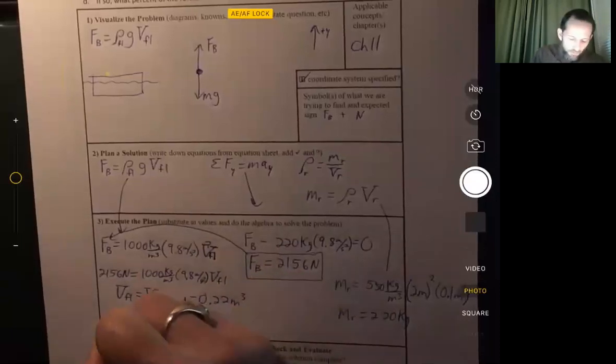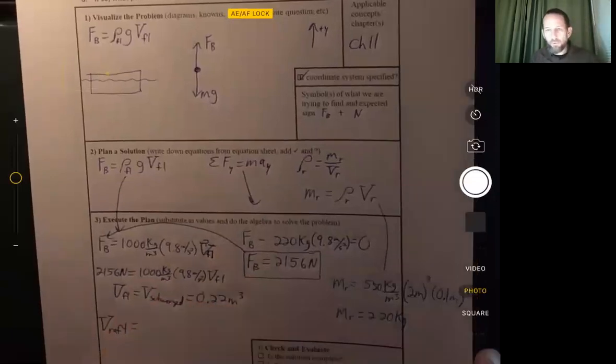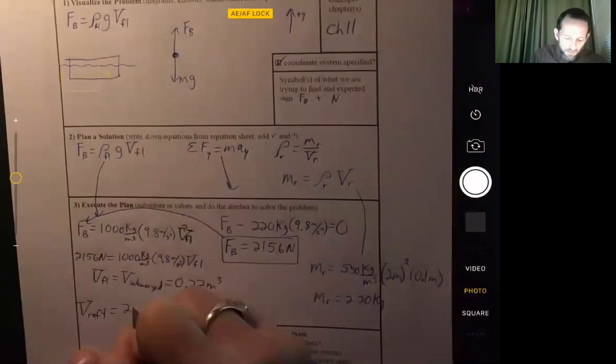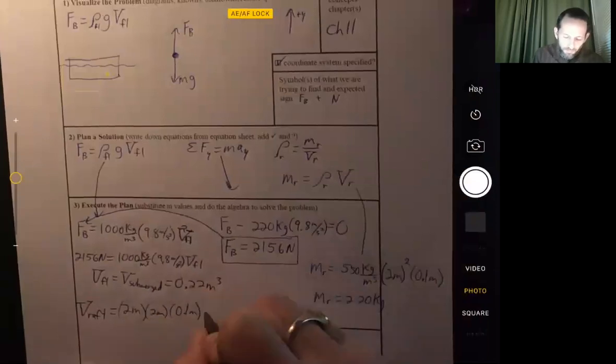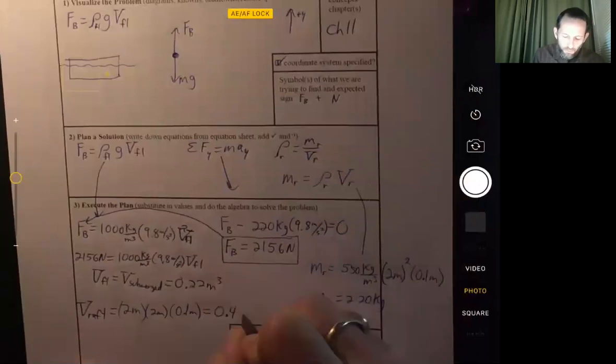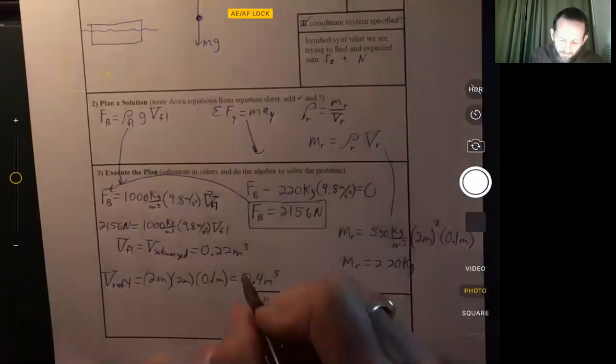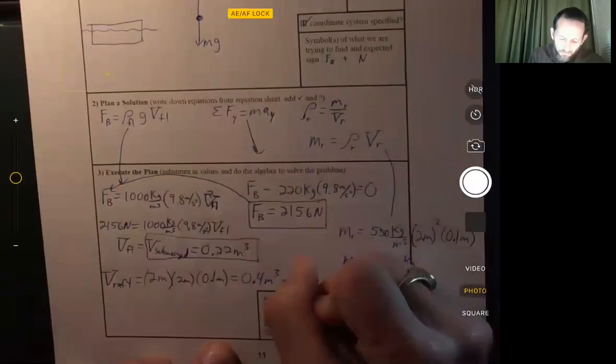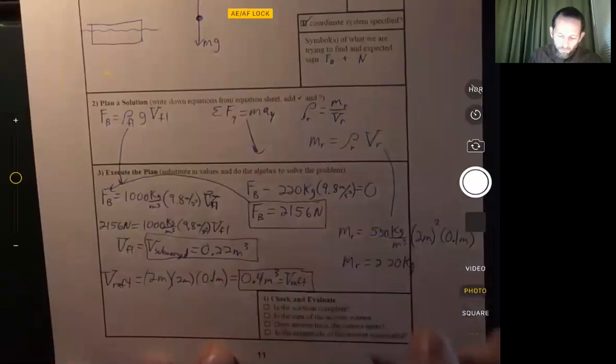The volume of the raft is, well, we calculated it before, we just didn't write it out specifically, but it's 2 meters times 2 meters times 0.1 meters. And so that's 0.4 cubic meters. All right. So we got that. There's our answers for part C.